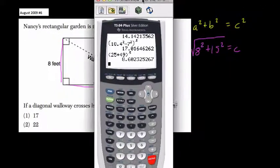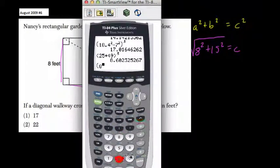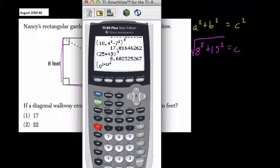On the graphing calculator, this can be quickly entered. Parentheses, we do 8 squared plus 15 squared. Press the right arrow, close parentheses to the half power.